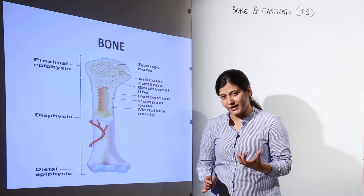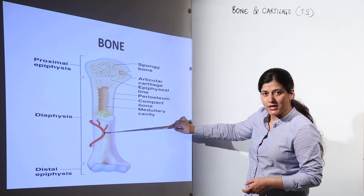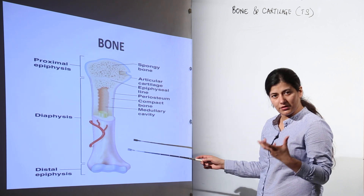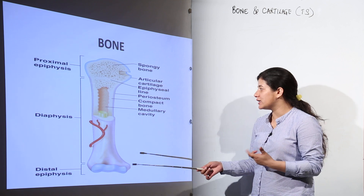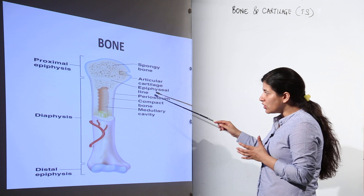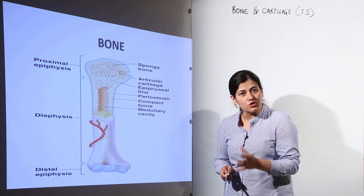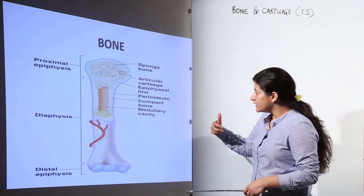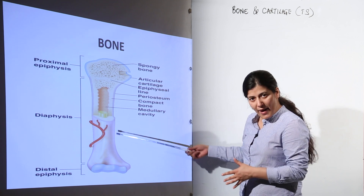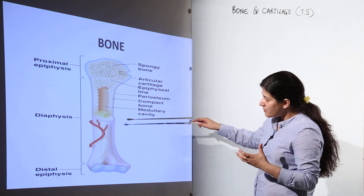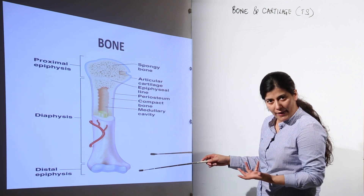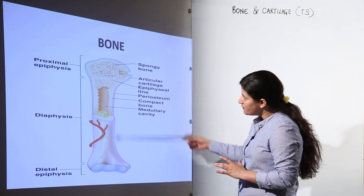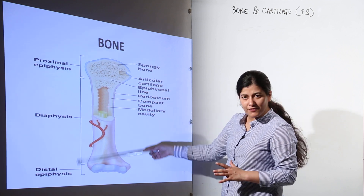Inside the bone, long bones have bone marrow present inside the medullary cavity. Around this medullary cavity is the compact bone. The medullary cavity houses the yellow or red bone marrow, which is responsible for production of blood in our body. In the compact bone is the arrangement of connective tissue — osteocytes, the cells responsible for formation of bone, are present in the compact bone. There is also a periosteum that lines the compact bone.